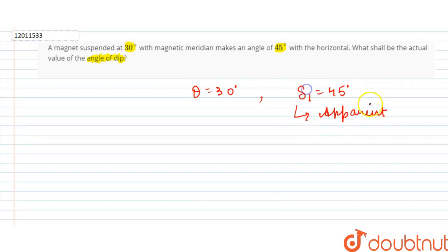We have to find the actual angle of dip. We assume that it is delta 2. We have to find out this value. So we know that the value of tan delta is vertical by horizontal.